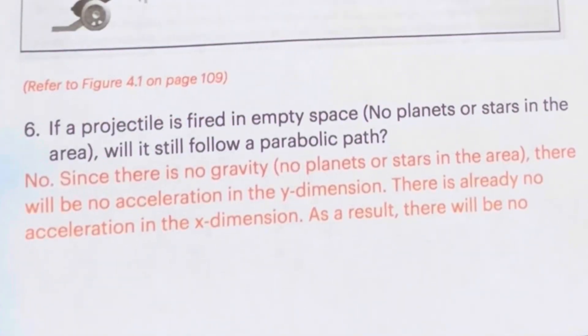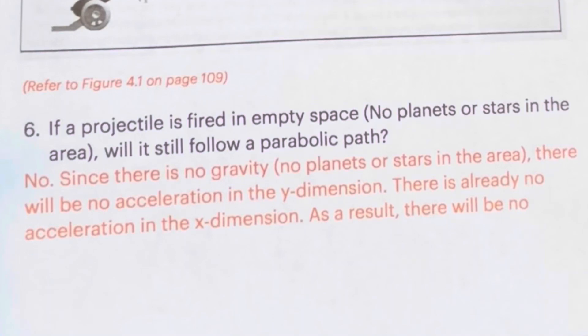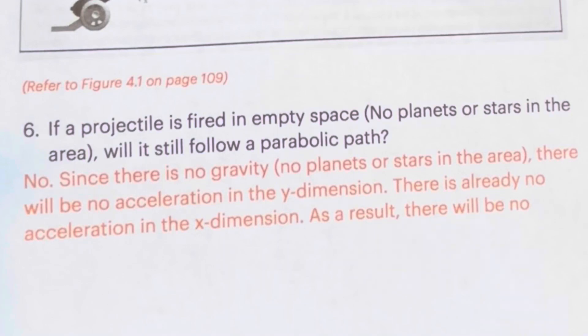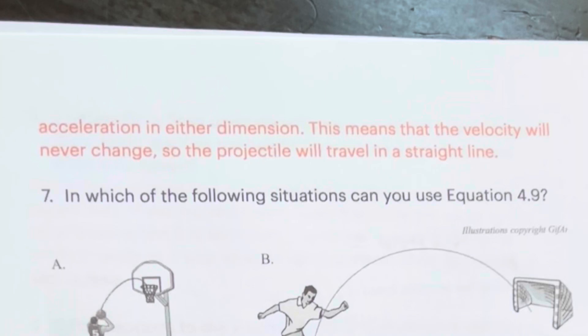If a projectile is fired in empty space, no planets or stars in the area, will it still follow a parabolic path? No. Since there is no gravity, no planets or stars in the area, there will be no acceleration in the Y dimension. There is already no acceleration in the X dimension, so as a result, there will be no acceleration in either. This means that the velocity will never change, so the projectile will travel in a straight line.